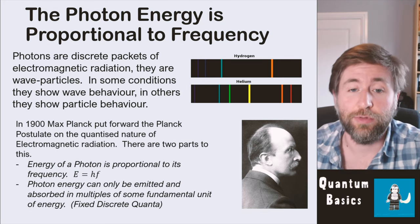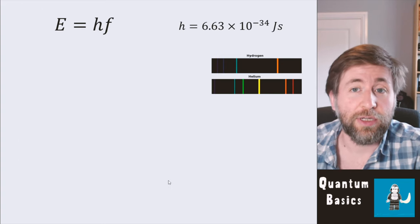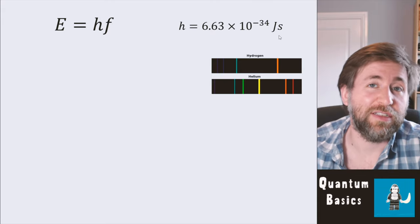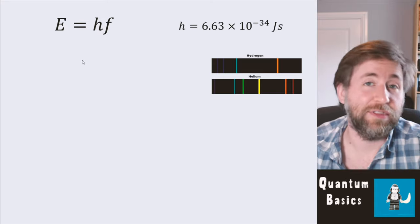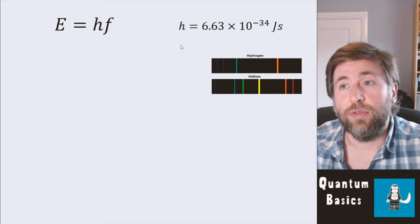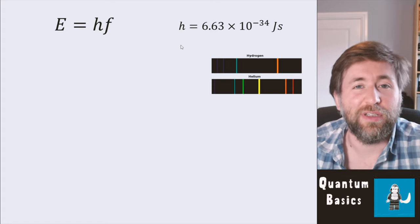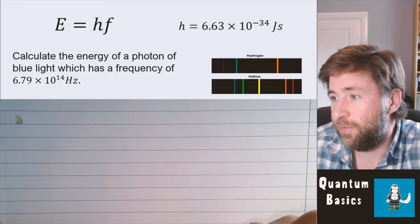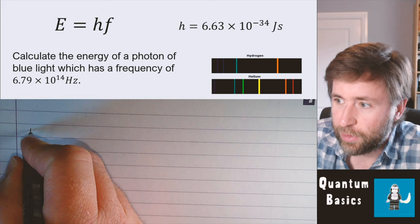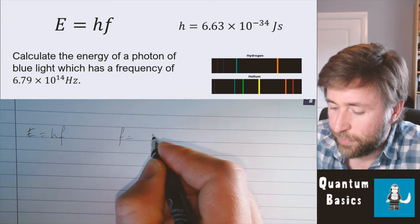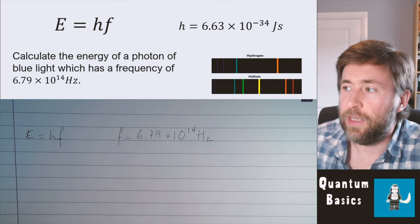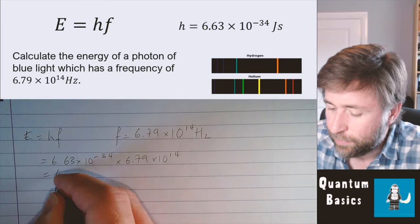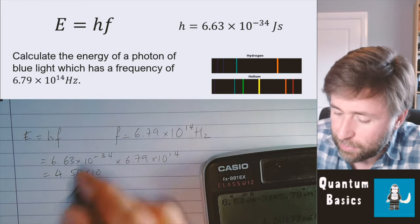Let's do some practice using E equals hf. We'll use Planck's constant as 6.63 times 10 to the minus 34 joule-seconds — a conversion factor between frequency and energy, given on the formula sheet. First question: calculate the energy of a photon of blue light which has a frequency of 6.79 times 10 to the 14 hertz. We write out our equation and everything we know, checking it's in SI units.